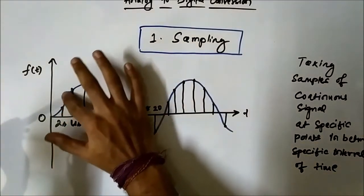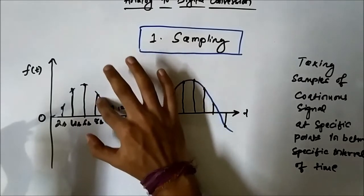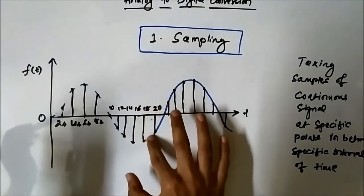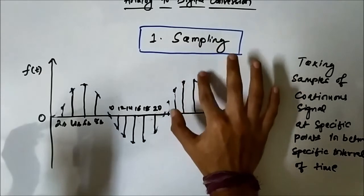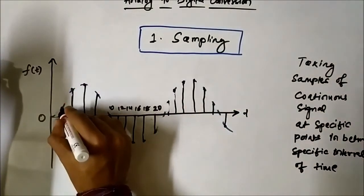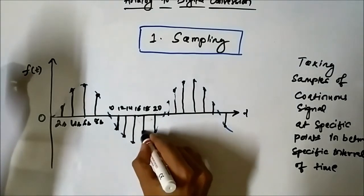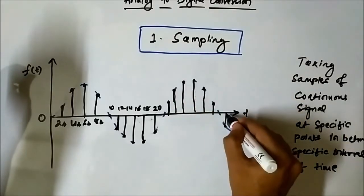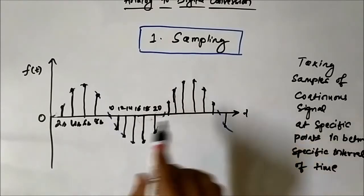Next, we remove the continuous portions — these portions between the samples are removed. What we are left with is called the discrete time signal. These samples are the representation of the discrete time signal. The samples are taken only at 2, 4, 6, 8, 10, 12 — the multiples of 2 — those time instants.